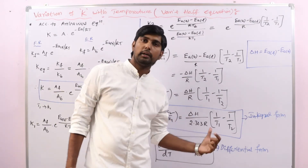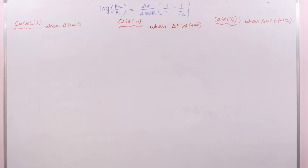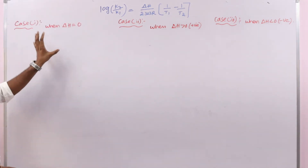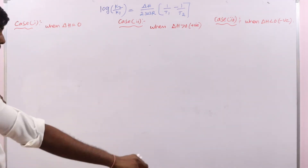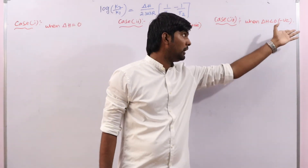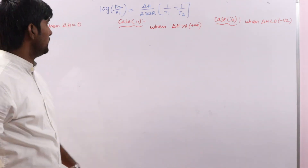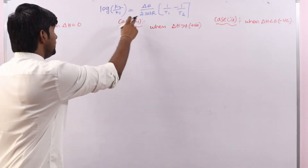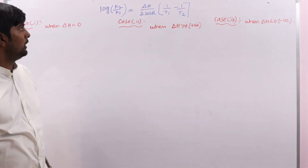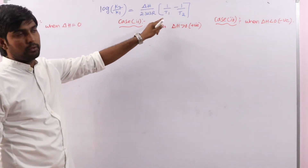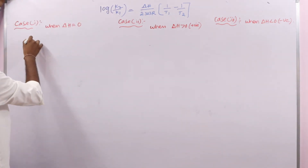Now ΔH will influence the dependence of K on temperature. There are three possibilities: ΔH may be zero, ΔH may be greater than zero (positive value), or ΔH may be less than zero (negative value). For the first case, when ΔH equals zero, this entire term becomes zero — zero into anything is zero — so the total value will be zero.